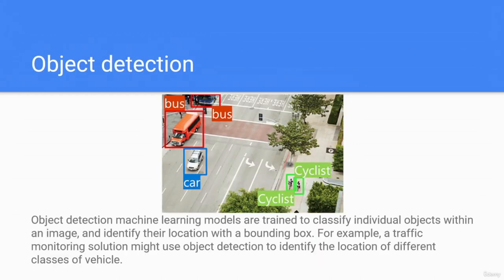Object detection: machine learning models are trained to classify individual objects within an image and identify their location with a bounding box. For example, a traffic monitoring solution might use object detection to identify the location of different classes of vehicles. Here you can see that the camera has detected a car, a bus, another bus, and cyclists — all identified and bounded.